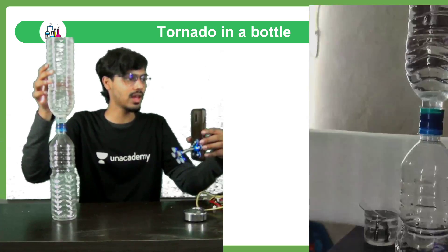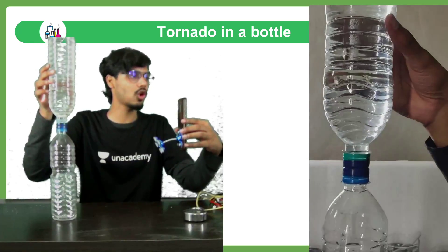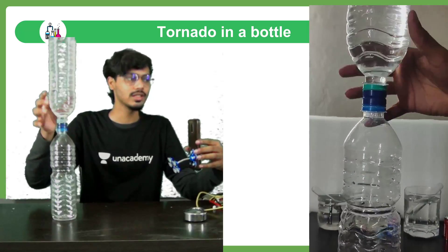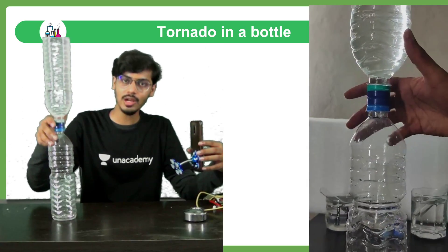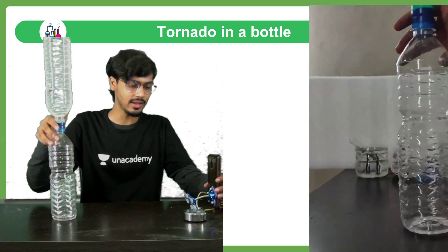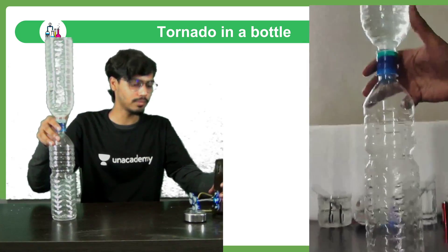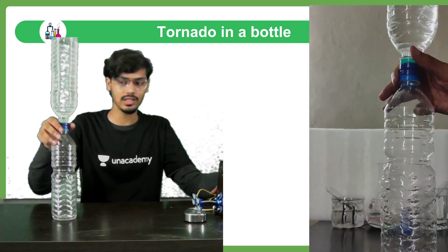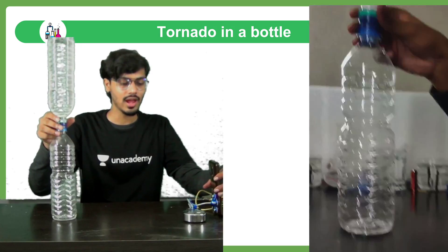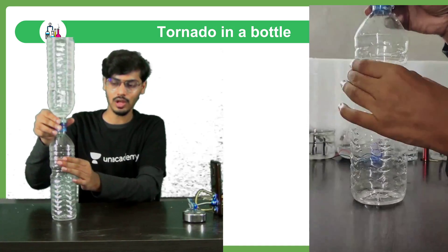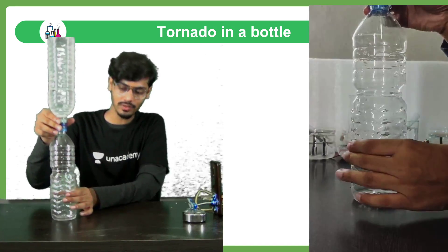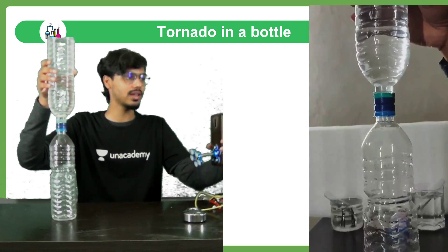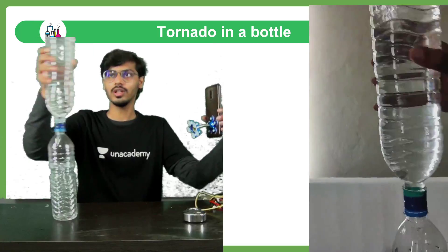Can you see the water has stopped coming? Why? Because the air in the bottom bottle has no place to go up. There is no passage for that air to go upward. And we know that air exerts pressure, so you can feel you can't even hold the bottle very steadily. Now what I am going to do is shake this round and round.